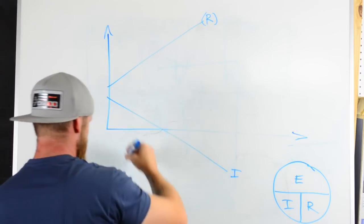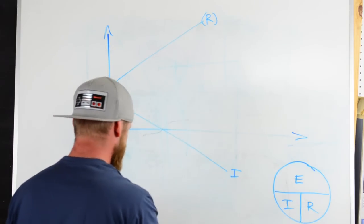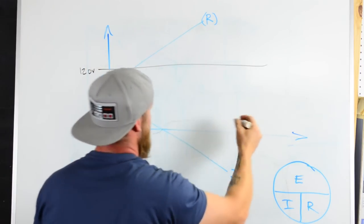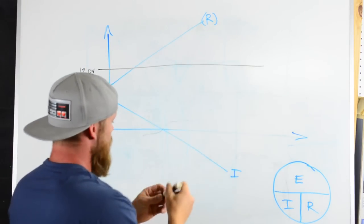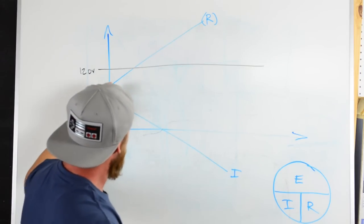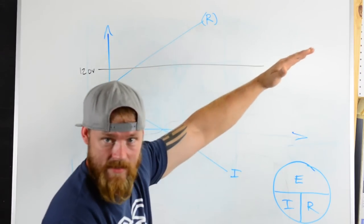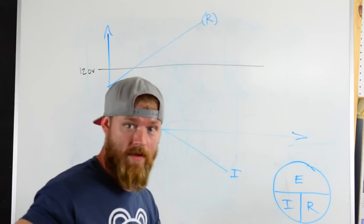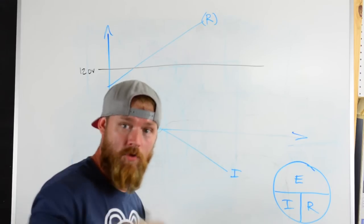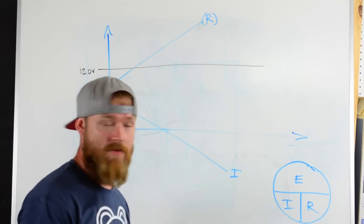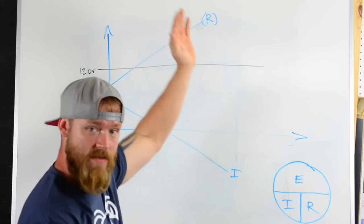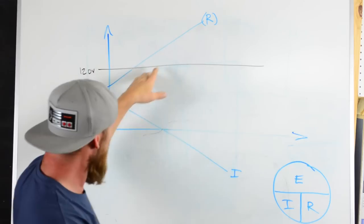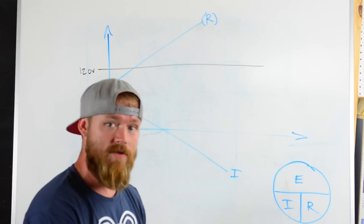If we ever wanted to solve for I, we would just cover I up and this is E divided by R. If we ever wanted to calculate resistance, we'd cover the R up and it would be R equals E over I. Or if we ever wanted to figure out voltage, we could figure out amperage times resistance. That's how that wheel works. Say that we have a given voltage, 120 volts, and that's a pretty constant value. Well, as you increase resistance in a circuit, you're going to decrease the current.